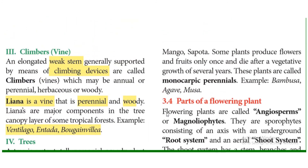There is one more type of perennial: monocarpic perennials. Some plants produce flowers and fruits only once during their lifetime. For example, bamboo. These are monocarpic perennials.